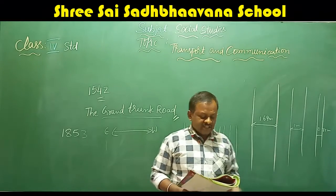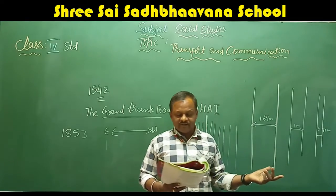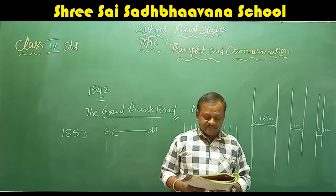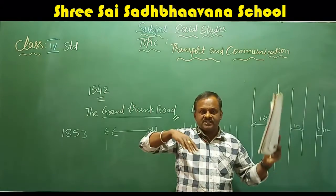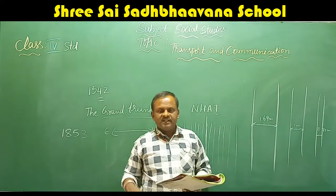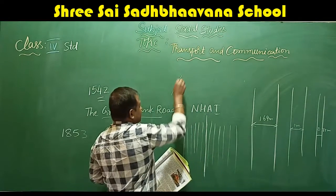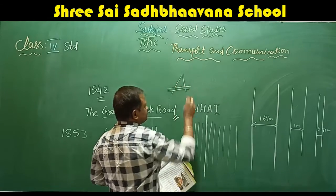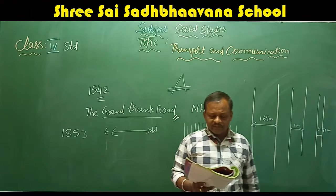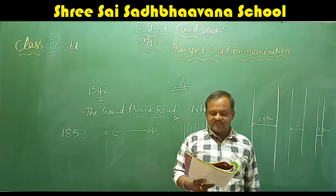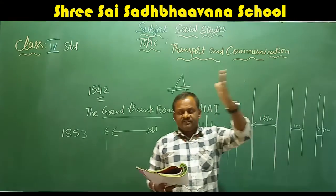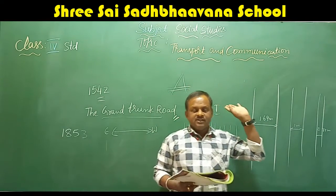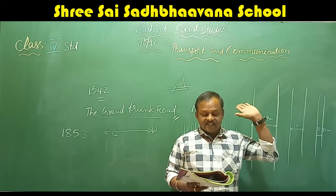Almost the whole country is connected through railways, including hill stations. The railways even cut through mountain ranges by way of tunnels. For example, the guard roads cut through the Western Ghats, the Vindhyas and the Satpuras. In our Karnataka, when you travel from Bangalore to Mangalore, you will see these tunnels.